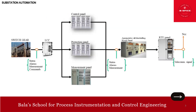This is all about substation automation. As you can see here, the switchgear is connected to the LCC. From there, the signals go to the control panel, protection panel, and measurement panel, then to the annunciation panels, then to the RTU, and from there to the NCC. That is the gist of it. Now we'll focus on each and every component.